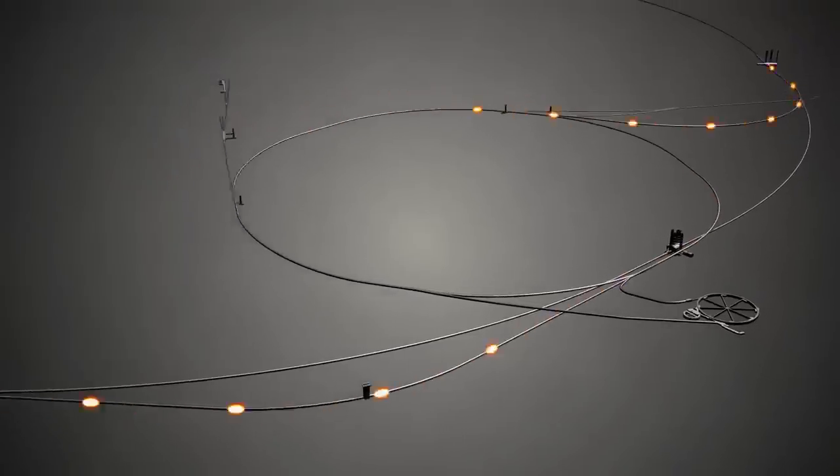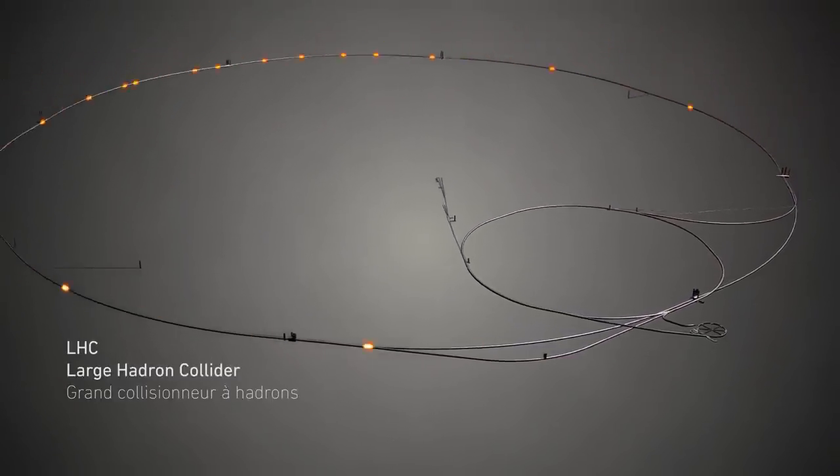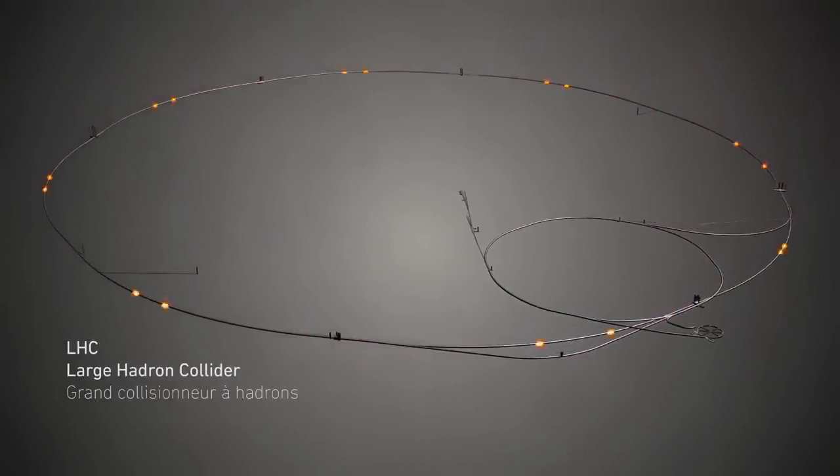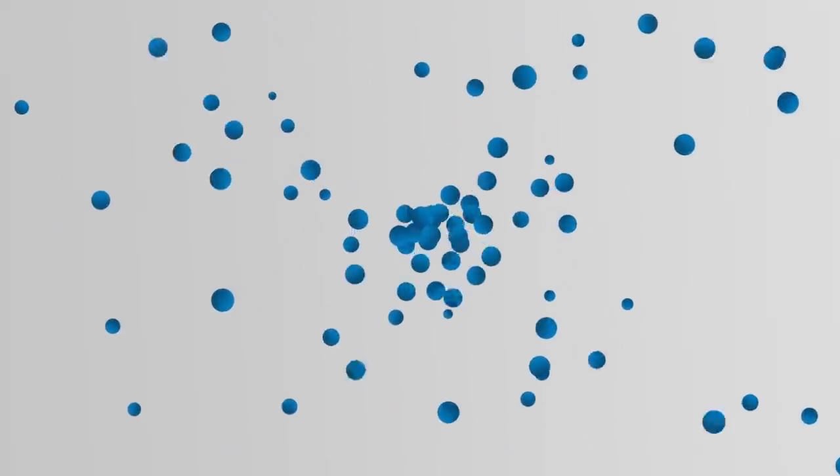This accelerator takes two beams, each containing about 300 trillion protons, and shoots them at one another. Even though there are lots of protons in the beams, individual collisions are only between two protons, one traveling in one direction and one traveling in the opposite direction.